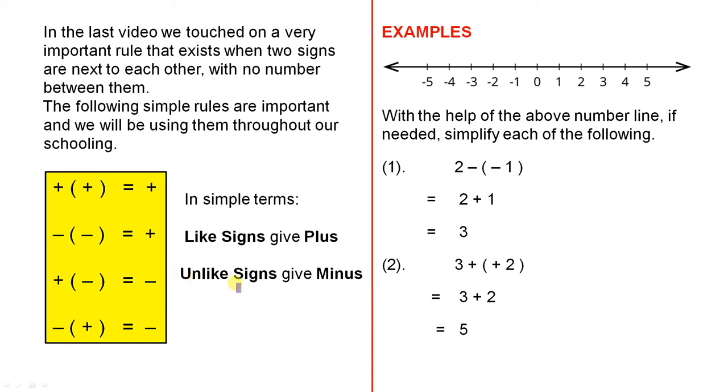Unlike signs give a minus. A positive and a negative are unlike, a negative and a positive are unlike, they both give minus.